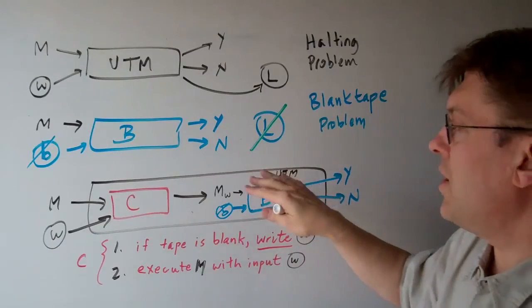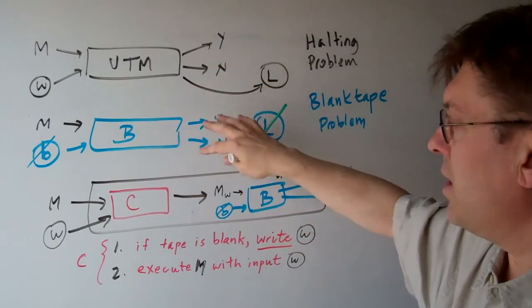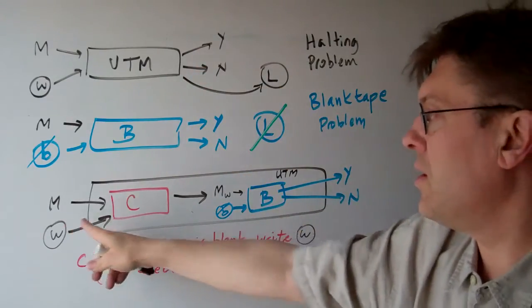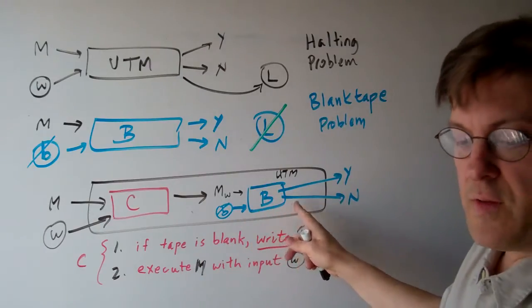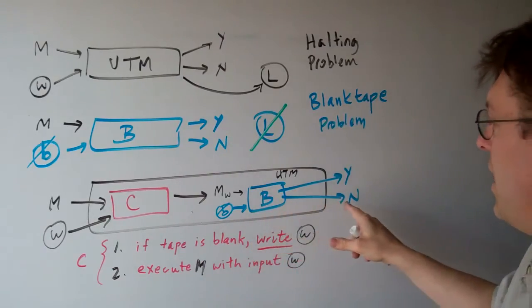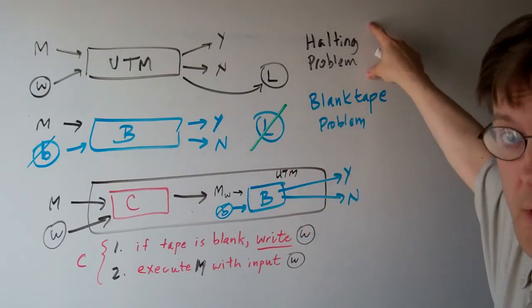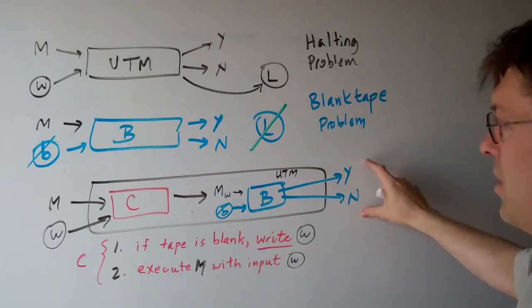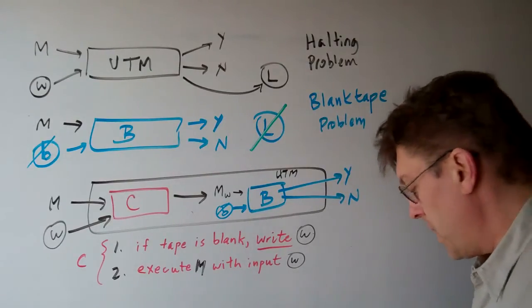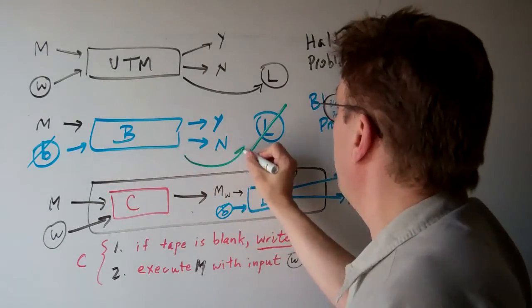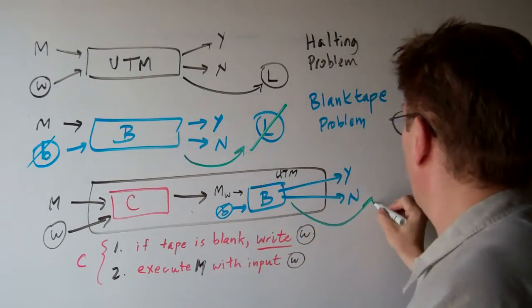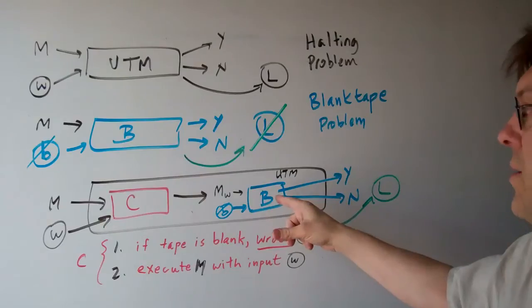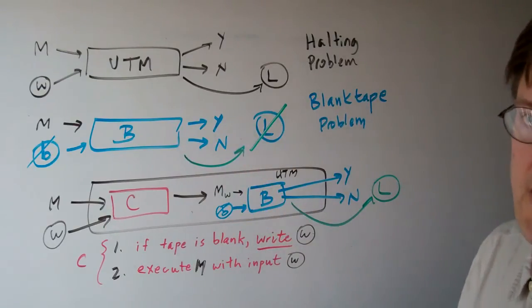So basically we're reducing this halting problem to the blank tape problem. We're converting this into something that the blank tape problem can satisfy. So what this is showing is that if the halting problem is undecidable, which we know it is, that the blank tape problem must be undecidable. That yes, it might loop forever, just the same as the other one. Because if it didn't loop forever, you could use the blank tape problem to solve the halting problem, and that's not possible.